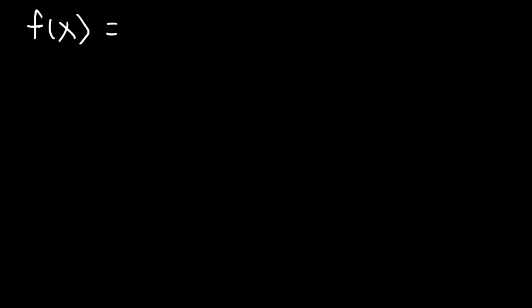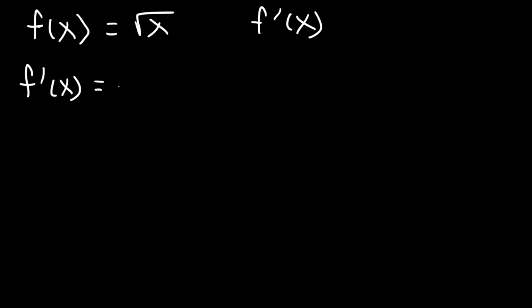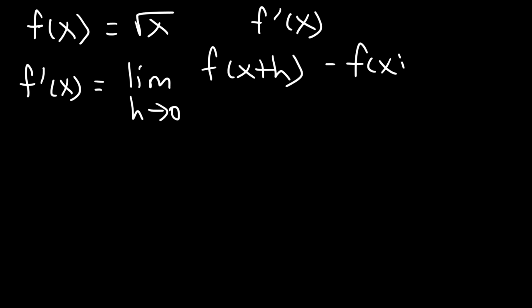Now let's say that f of x is equal to the square root of x. What is the first derivative, f prime of x? So let's start with the formula: f prime of x is equal to the limit as h approaches 0 of f of x plus h minus f of x over h.